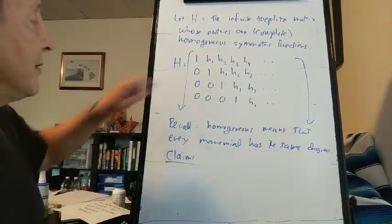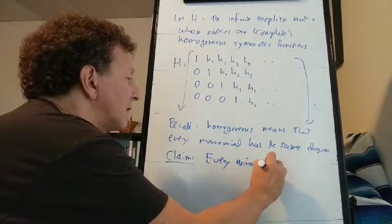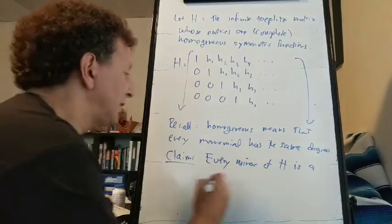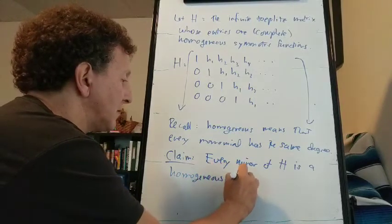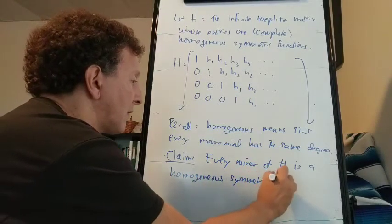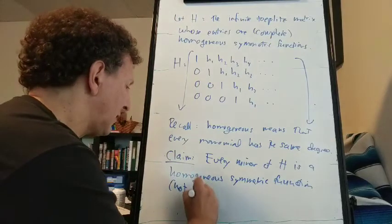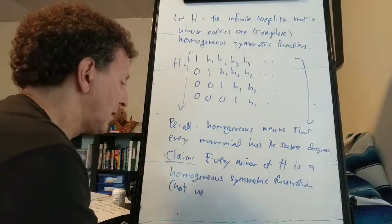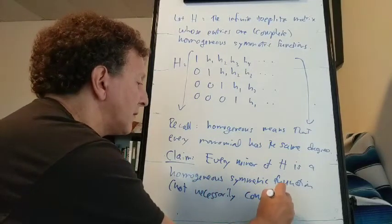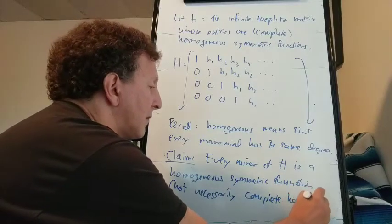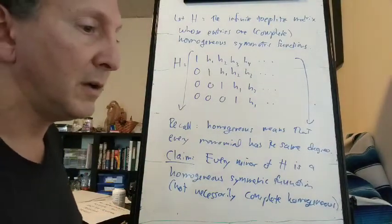So I claim that every minor of this matrix H is a homogeneous symmetric function — so not necessarily complete homogeneous.